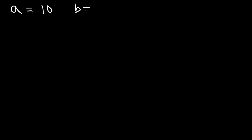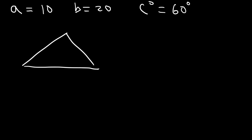Let's say side A is 10 and side B is 20 and angle C is 60 degrees. Go ahead and solve the triangle. So first let's draw it. This is angle A, B, and C. So angle C is 60 degrees, side A is 10, side B is 20. So what we have is a side, angle, side triangle.